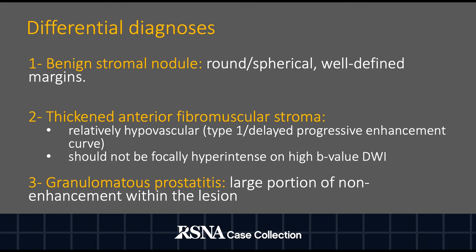Some differentials to consider: benign stromal nodules can show restricted diffusion, but these should be spherical in shape with well-defined margins. Sometimes a thickened anterior fibromuscular stroma can mimic an anterior transition zone tumor, but this normal variant should not show focal high signal on high B value DWI and should be relatively hypovascular.